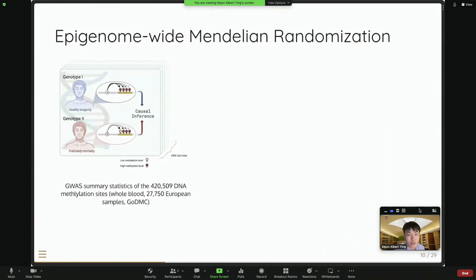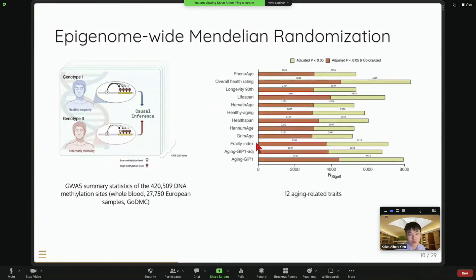So here we did this epigenome-wide Mendelian randomization. We assessed the potential causal effect of 420,000 DNA methylation sites across the genome. And we checked 12 different aging-related outcomes. So you can see there are lifespan, health span, healthy aging, and a lot of different kinds of phenotype. We collected from different sources. But here I want to focus on this aging GIP1 because it's a genetic principal component analysis. You can consider it's combining information from health span, lifespan, and it can be considered as a genetic representation of the healthy aging.